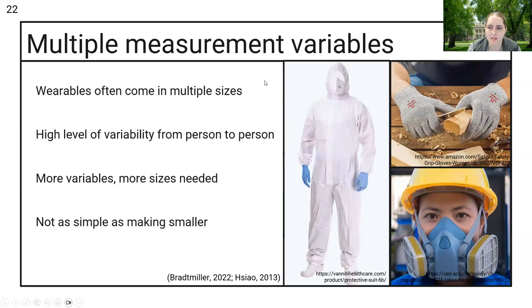But mostly we see PPE having multiple measurement variables that are important. Wearables do often come in multiple sizes, but it's a question of if there are enough sizes, because there's a high level of variability from person to person. If we think about gloves, we can think about each finger's individual circumference, the length of the fingers, the size of the palm, the length of the thumb. All of these things affect the fit of gloves and also affect the dexterity and the protection afforded to the wearer.